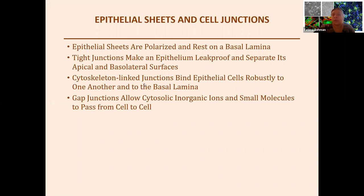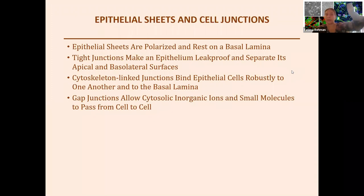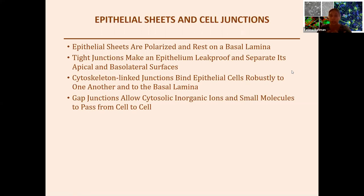To review: epithelial sheets are polarized cells bound to the basal lamina. Tight junctions make the epithelium leak-proof, separating it into apical and basolateral surfaces. Cytoskeleton-linked junctions bind cells strongly to each other and to the basal lamina. Gap junctions in animal cells and plasmodesmata in plant cells allow cytosolic exchange and cell signaling molecules to pass from cell to cell, creating a similar environment throughout the epithelial sheet.